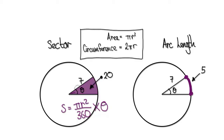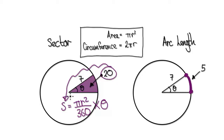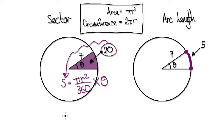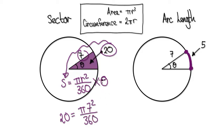We know that this area here is 20, so we can put 20 into here. That would then become 20 = π × 7² / 360. When you multiply a fraction, the theta gets multiplied to the top.